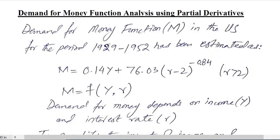For finding the equilibrium in money market, one should know about the demand for money as well as supply of money. Here we are going to shed some light on the demand for money function, and that will be done by using partial derivatives.